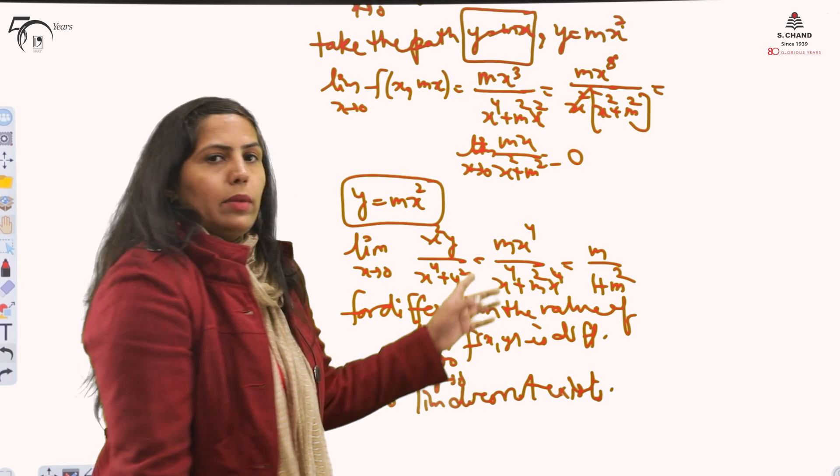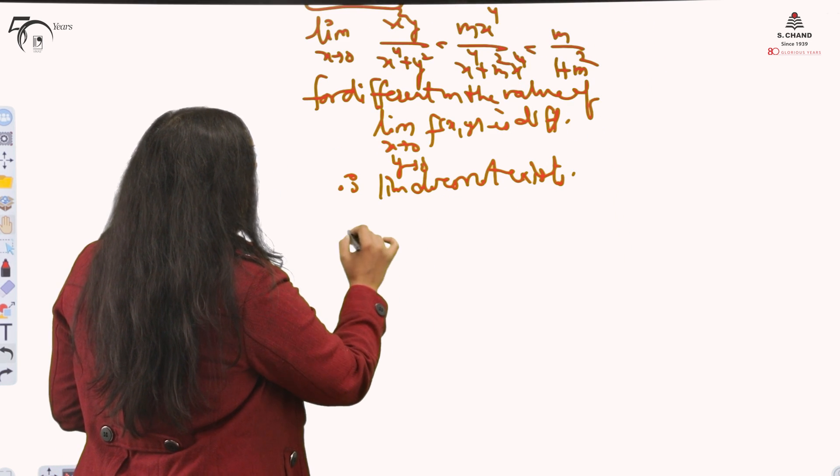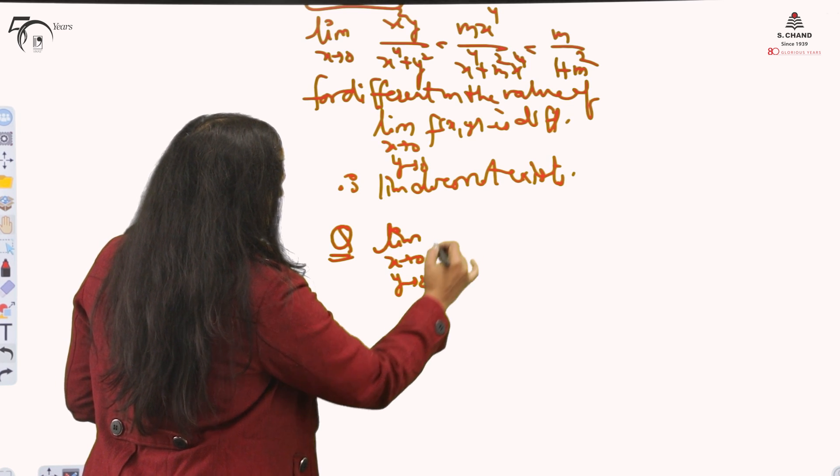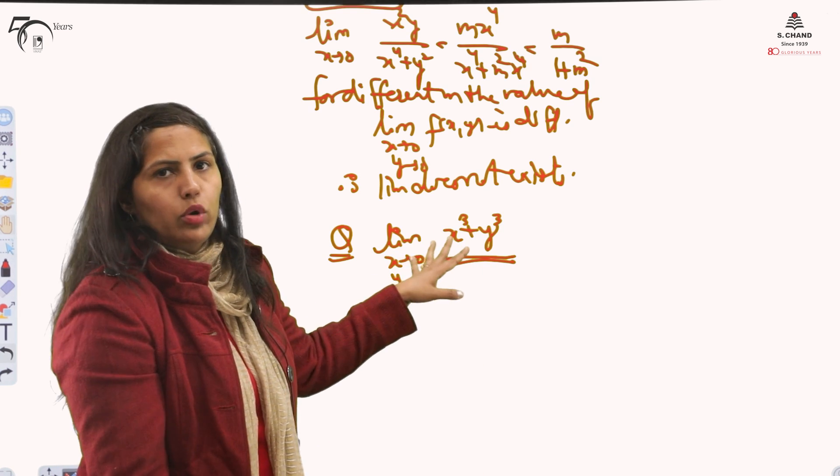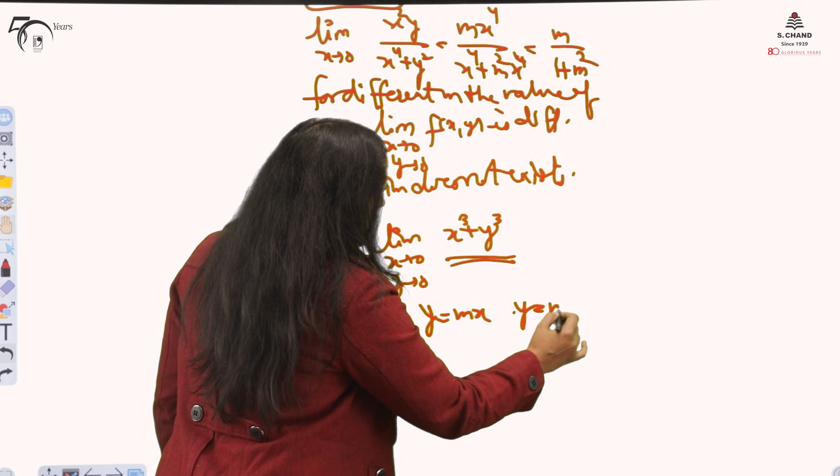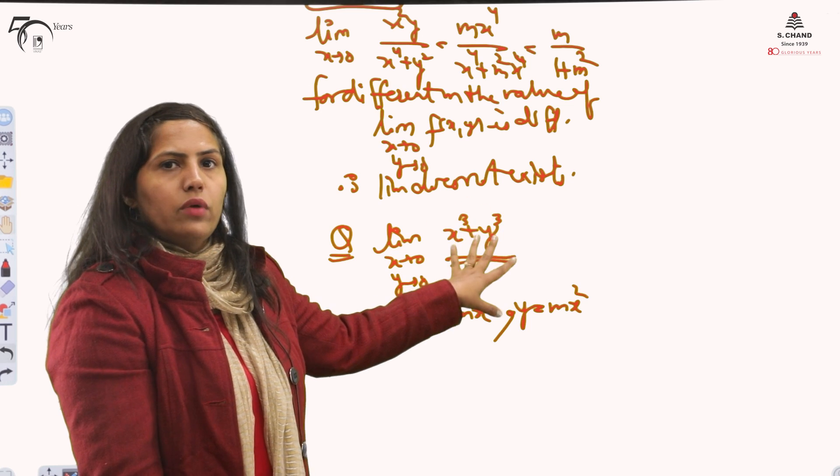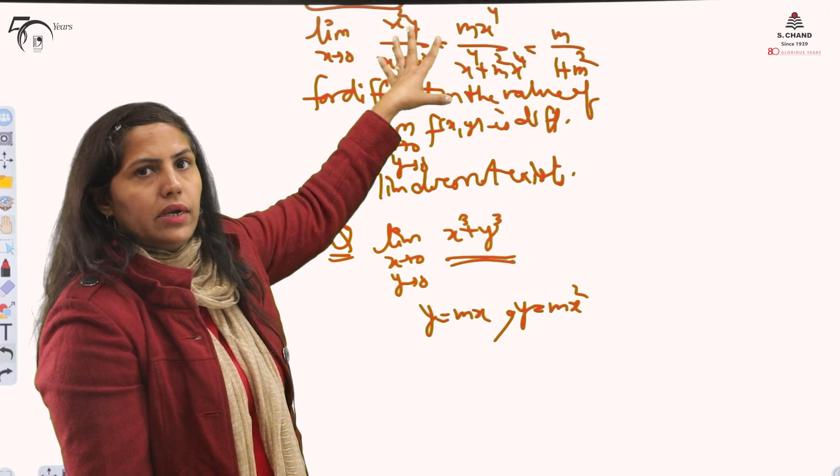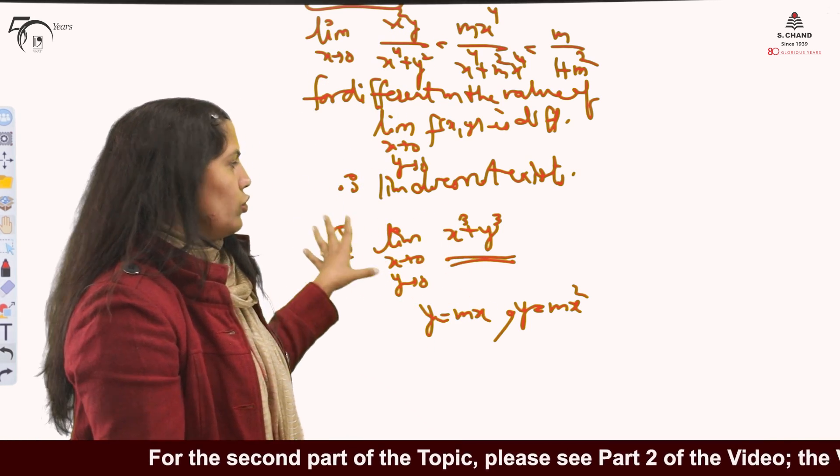It means, if the limit will be existing, we have one example. There you can check. And the example is. Limit x tending to 0, y tending to 0. x³ + y³. In this, whatever you do. First you check the simultaneous limits. Then put y = mx. Or y = mx². It will give you 0, 0, 0. It means, the limit of this function exists. And the function which we have taken earlier, the limit does not exist. This is how we check limit in two variables. For the two variable function.